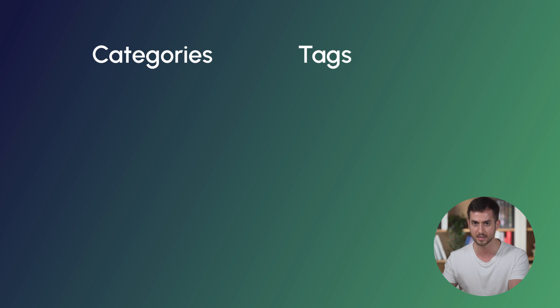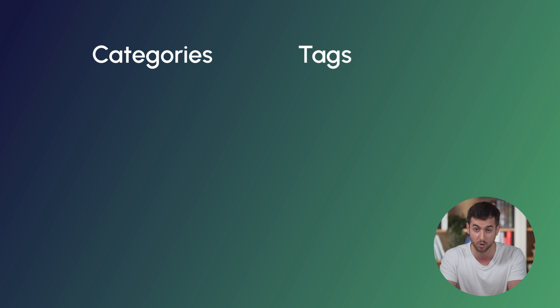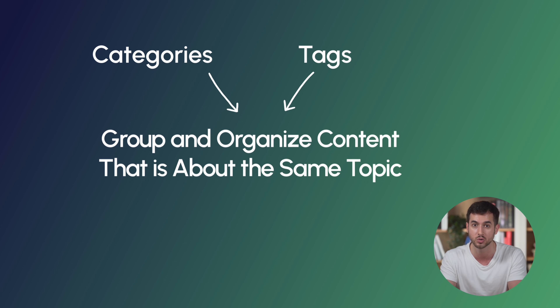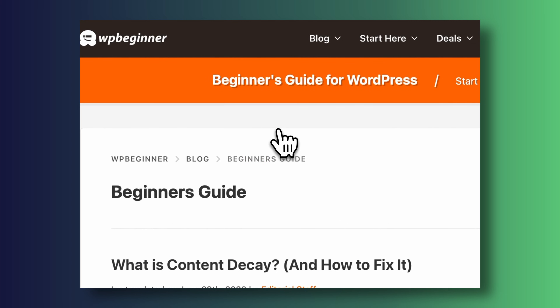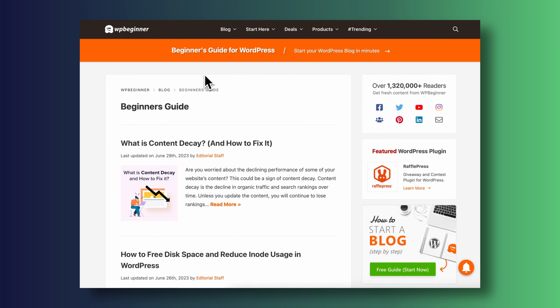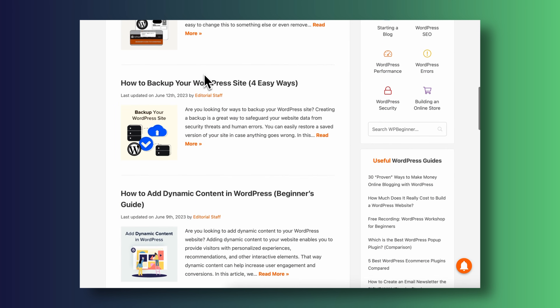First things first, let's quickly analyze what categories and tags are used for. Both tags and categories share the same exact use case on WordPress — their purpose is to allow you to group and organize content that is about the same topic. You can click on a category or a tag on the front end of your WordPress website and WordPress will automatically redirect you to what they call an archive page, which organizes content about a given topic. WordPress creates archive pages for both categories and tags.